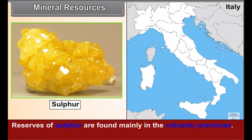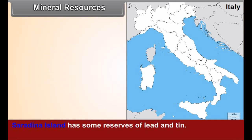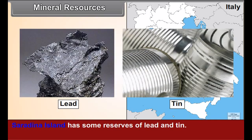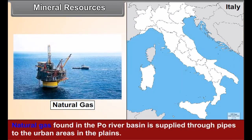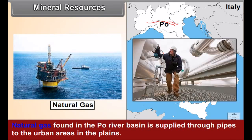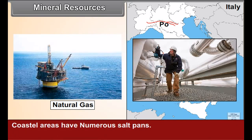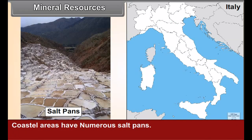Mineral resources: Italy is a leading sulfur-producing country; deposits of sulfur are found mainly in the volcanic provinces. Sardinia Island has some reserves of lead and tin; coal is also mined in Sardinia. Natural gas found in the Po river basin is supplied through pipes to urban areas in the plains. Coastal areas have numerous salt pans.